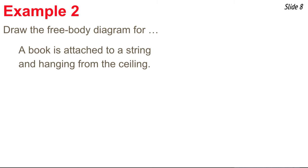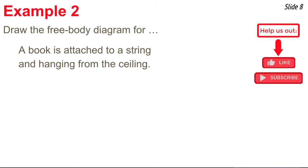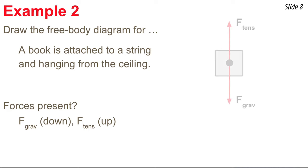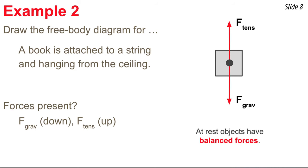In example two, we draw the free body diagram for a book attached to a string and hanging from the ceiling. Gravity is always present and acts downward. The book is touching a string, and strings exert tension forces — that's an upward force. So I draw two arrows: a down arrow labeled F-grav and an up arrow labeled F-tension. Because this book is stationary, the up and down forces balance, and they're drawn to the same length.